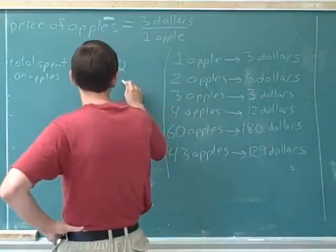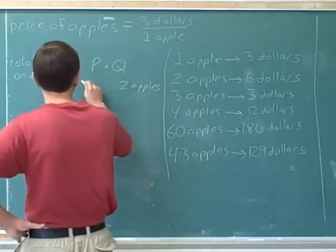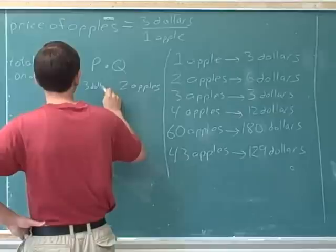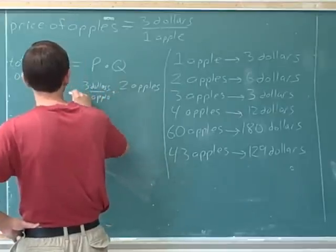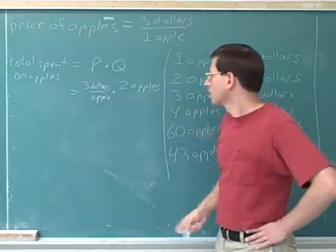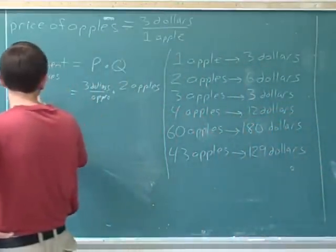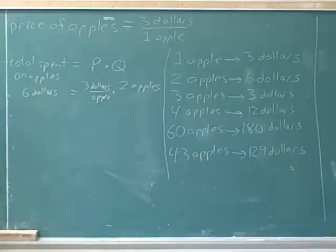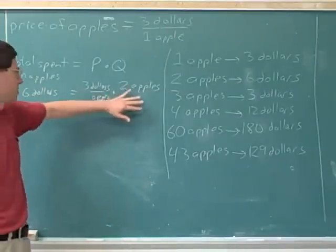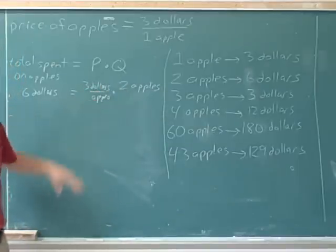Let's say that you bought two apples at $3 per apple. Well, $3 per apple times two apples — the apples would cancel — and that would give you $6 total. So we can see this equation works. The total amount you spend on apples is the price of apples times the quantity. We can confirm that by using a unit analysis.